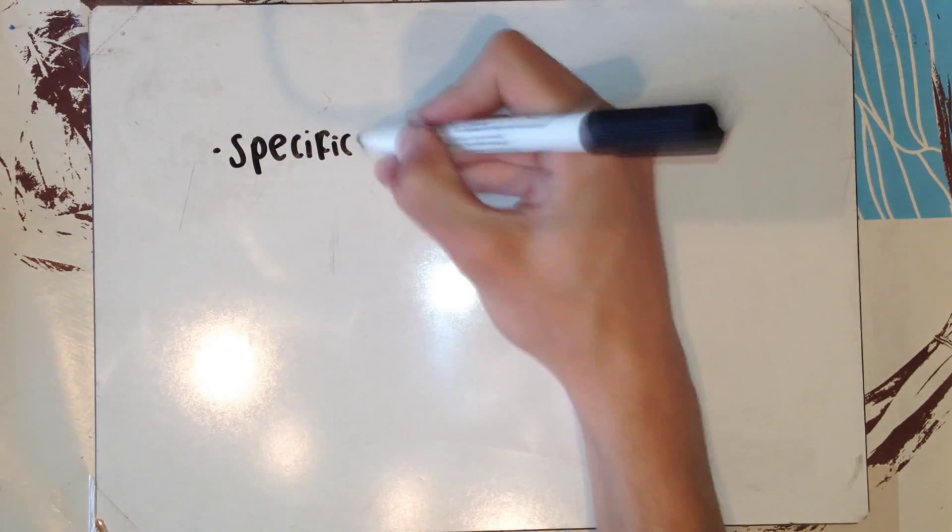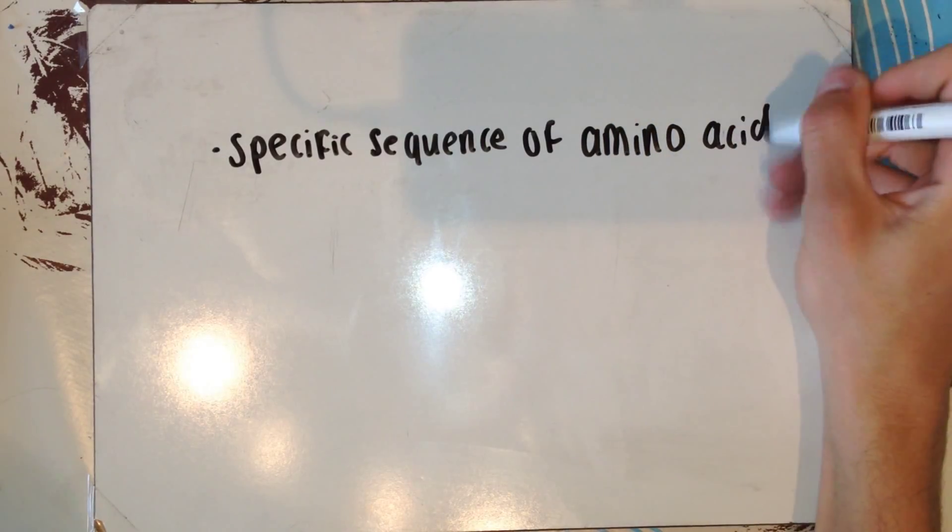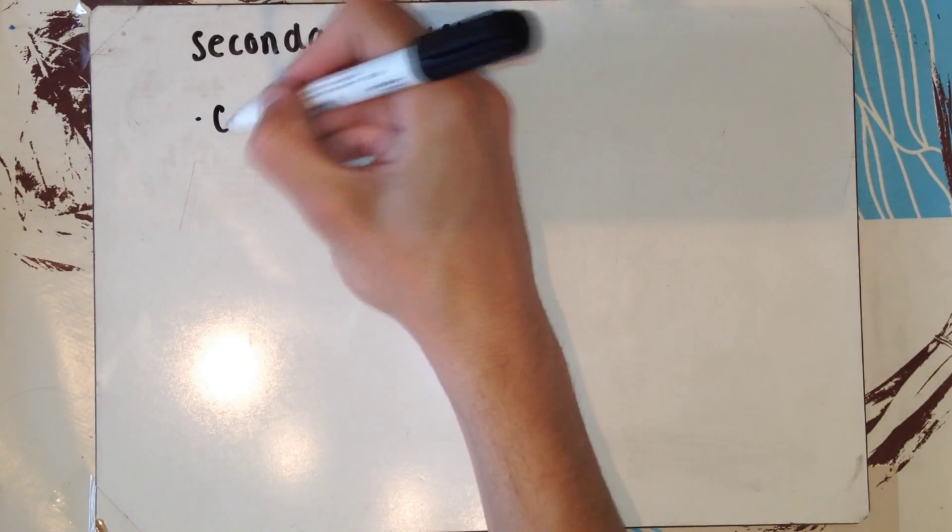What is the primary structure of a polypeptide? Primary structure is a specific sequence of amino acids that make up the polypeptide chain.